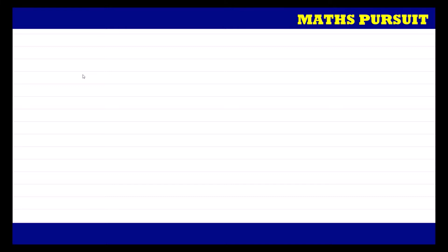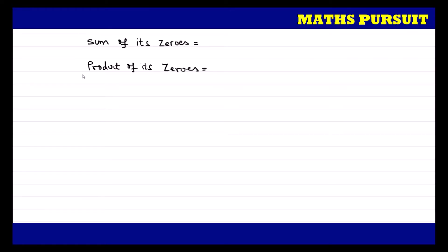The question has given us two things: one is sum of its zeros, and the other is product of its zeros. The number given for sum of zeros is root 2, and 1 upon 3 is the product of its zeros.